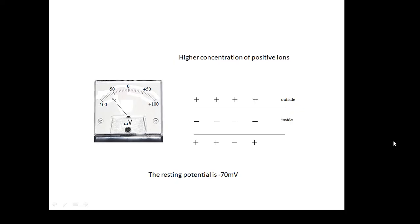Here's the inside and the outside of the axon, and notice that the inside is negative relative to the outside. The inside is negative, the outside is positive. There is a voltage, a potential difference. If the axon is at rest, then the resting potential is minus 70 millivolts — that's the potential difference between the inside and the outside, minus 70 millivolts because the inside is negative.